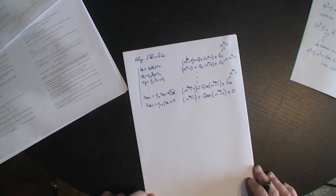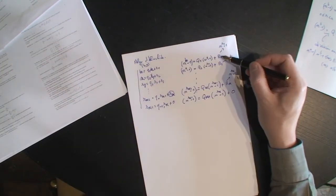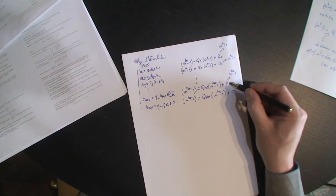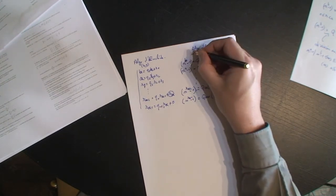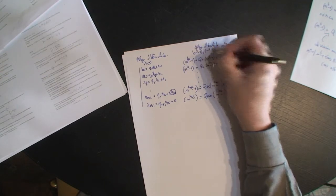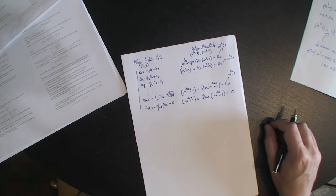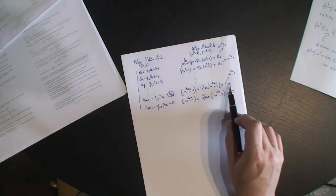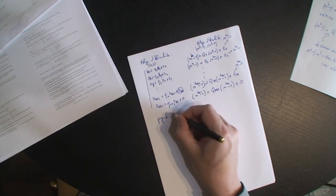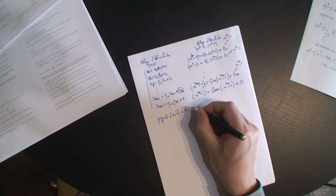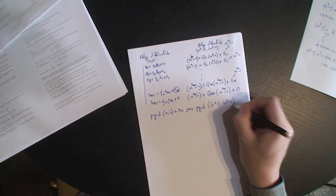Vous voyez que les hypothèses : à chaque fois j'obtiens une division euclidienne, et là j'obtiens le dernier reste non nul. Donc ça, c'est aussi l'algorithme d'Euclide pour le couple N puissance B moins 1 et N puissance A moins 1. Il y a un seul algorithme d'Euclide. Et qu'est-ce que me dit l'algorithme d'Euclide ? Il me dit que le dernier reste non nul correspond au PGCD. Donc vous voyez que PGCD(A,B) = Rk si et seulement si PGCD(N^A - 1, N^B - 1) = grand Rk.